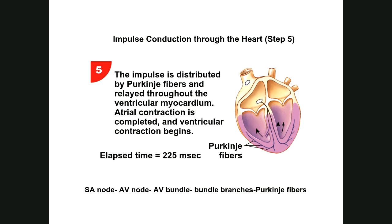In general: the impulse arrives at the SA node, the SA node sends it to the AV node. There is a delay because the SA node has to wait for the left atrium to contract as well. Then it goes through the AV node, AV bundle, bundle branches — left and right — and then the Purkinje fibers, and ventricular contractions start.